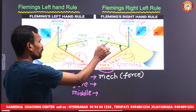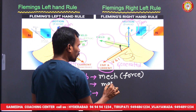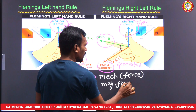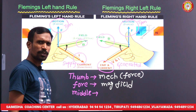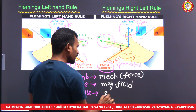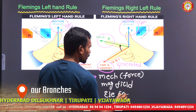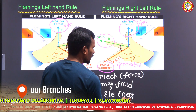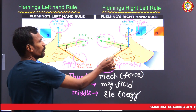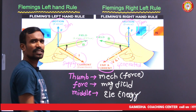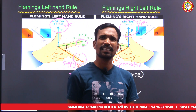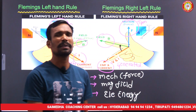If the forefinger represents the magnetic field direction and the middle finger represents electrical energy — which may be current or voltage — this is a simple way of understanding Fleming's rules.